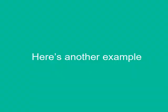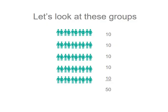Here's another example to show how this works. Let's look at these groups of people. Each group has ten people in it. So if we add ten together five times, we get fifty altogether: ten, twenty, thirty, forty, fifty.